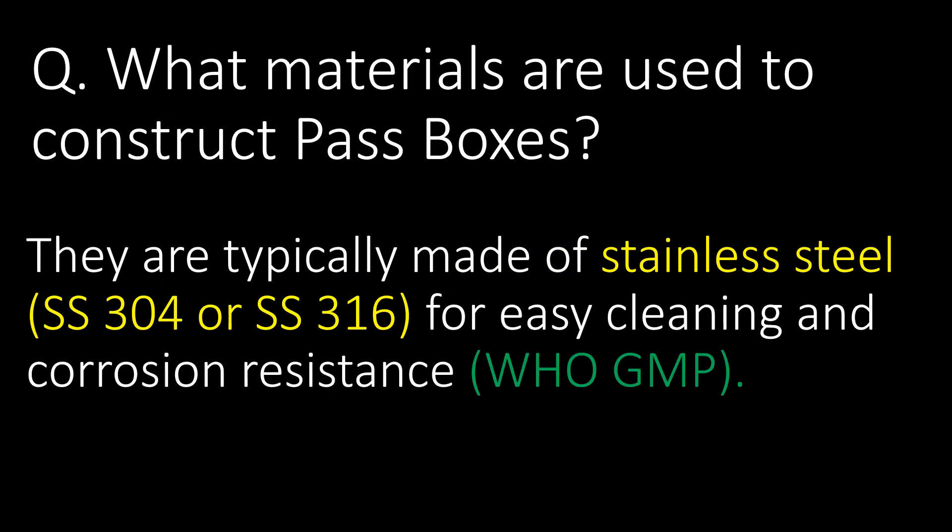What materials are used to construct pass boxes? Pass boxes are typically made of stainless steel, either grade SS304 or SS316, for easy cleaning and corrosion resistance. Reference guideline: WHO GMP.